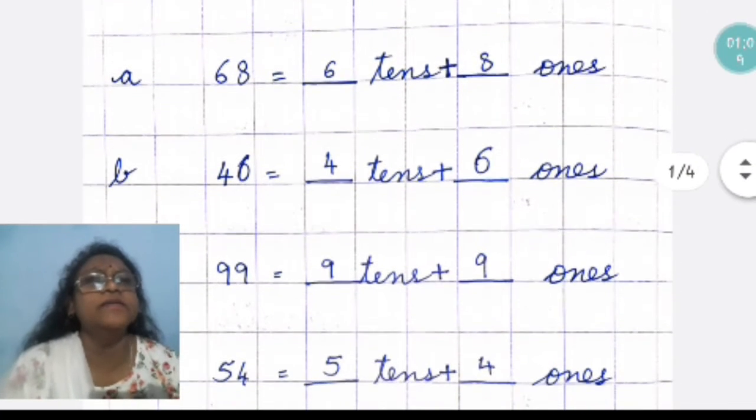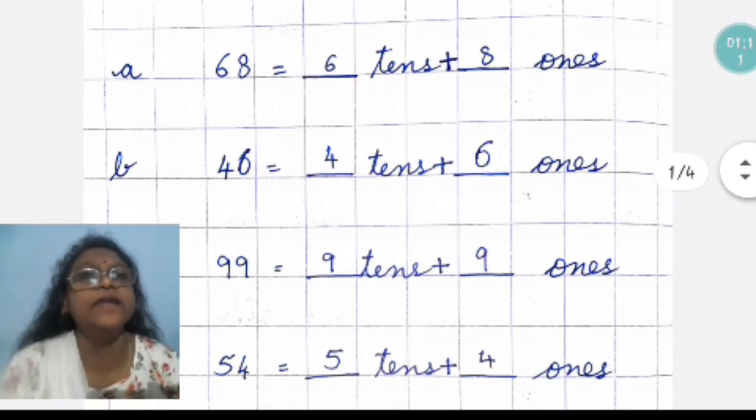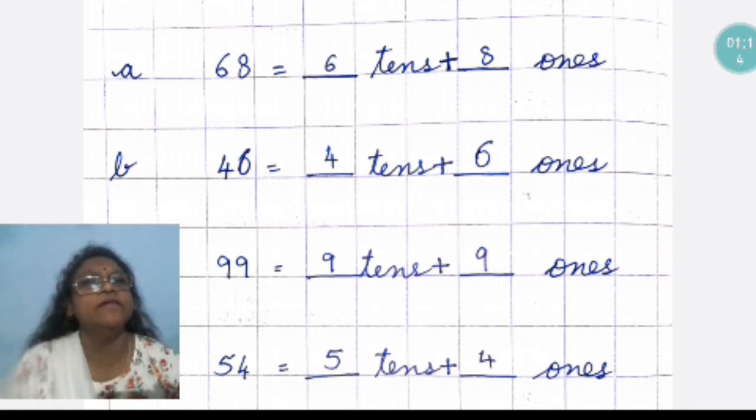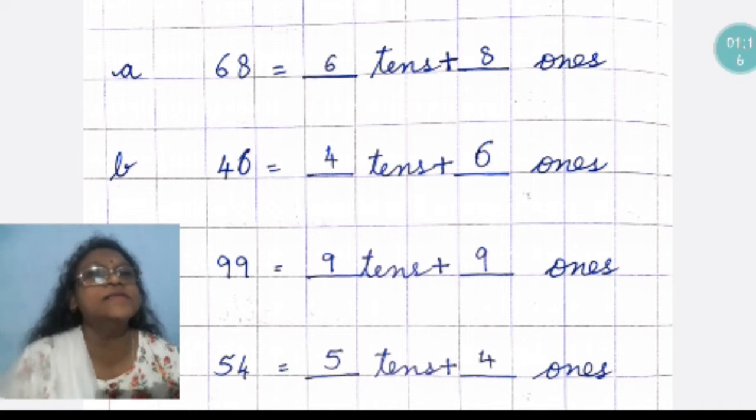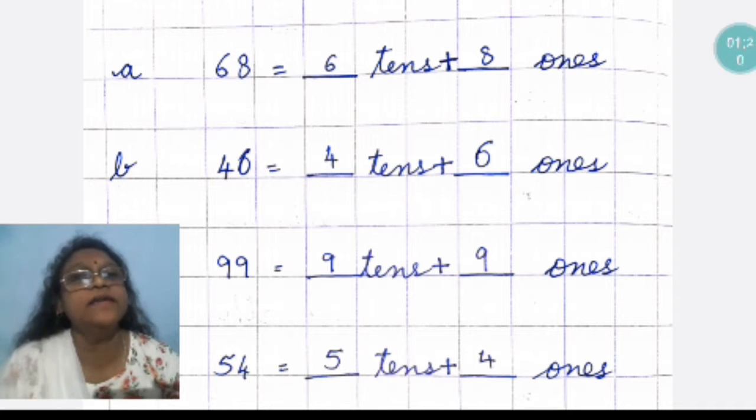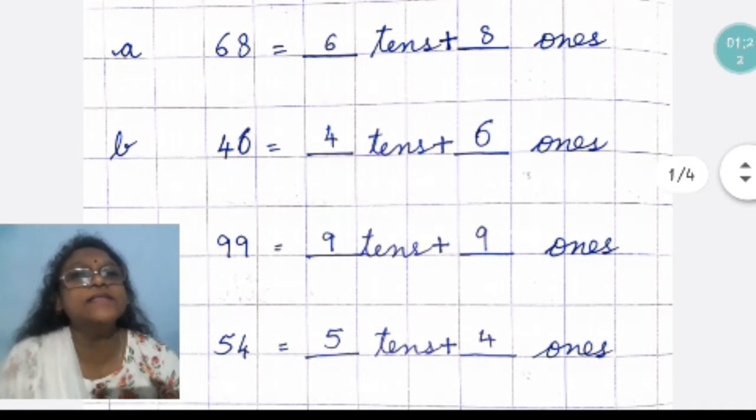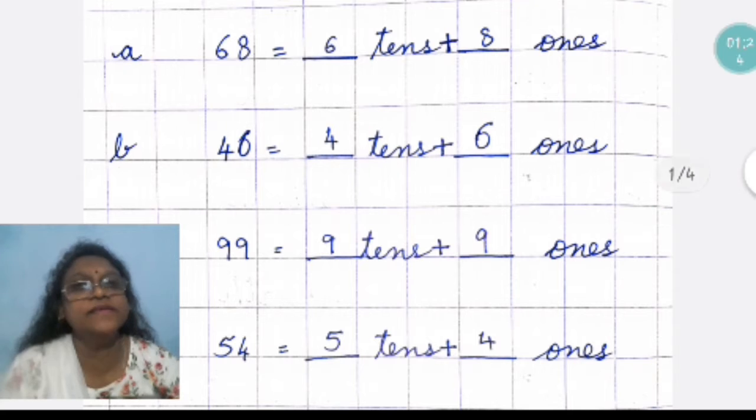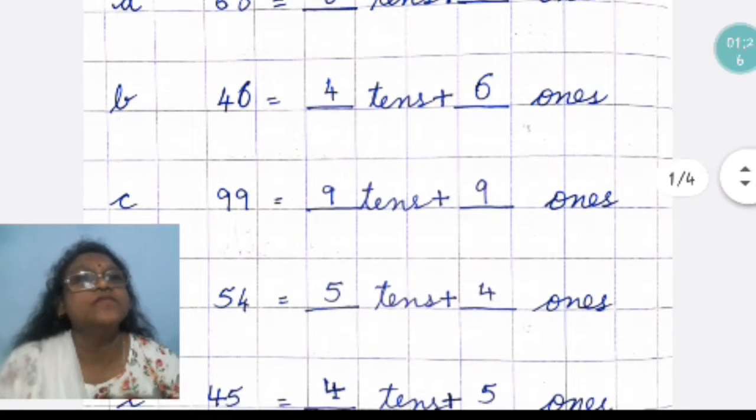Number A, it is 68. What I have told you is that right side will write ones and left side tens. So, on the right side it is 8. So, ones is 8 and 6 is tens.